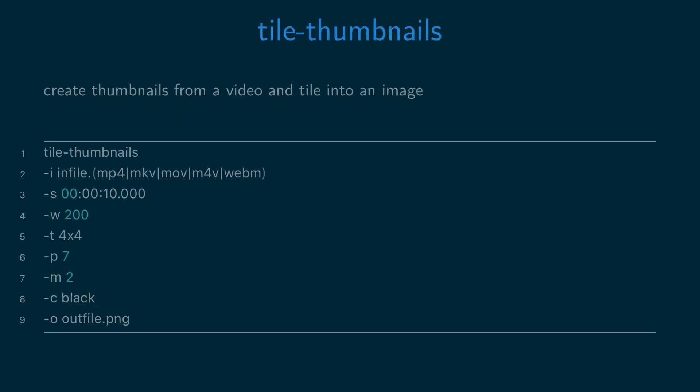The Tile Thumbnails script creates thumbnails from a video and tiles them into an image. Run the Tile Thumbnails script with the dash I option and the path to the video file. The dash S option is used to specify the point in the video at which to create the first frame from. For example, you might have a video that says 'stream about to start' and you don't want to create a screenshot of that, so you'd use the dash S option to specify a point in the video after that slide is finished at which to start creating the frames from.